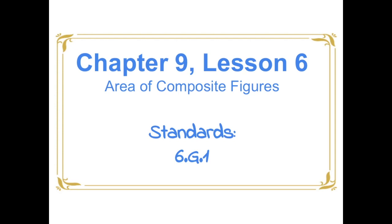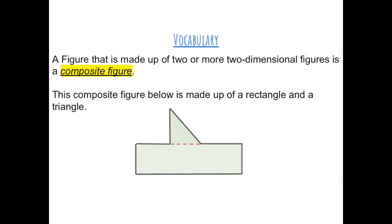Chapter 9, Lesson 6, Area of Composite Figures. A figure that is made up of two or more two-dimensional figures is a composite figure. This composite figure below is made up of a rectangle and a triangle.